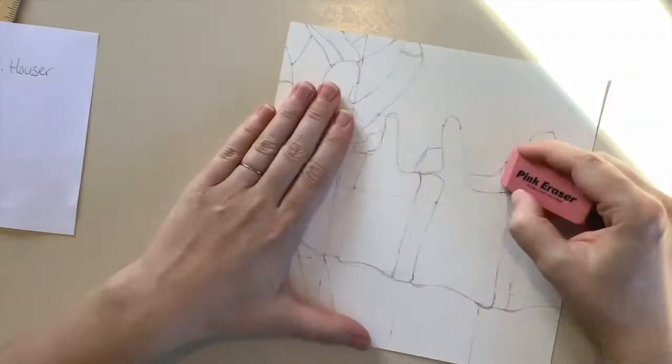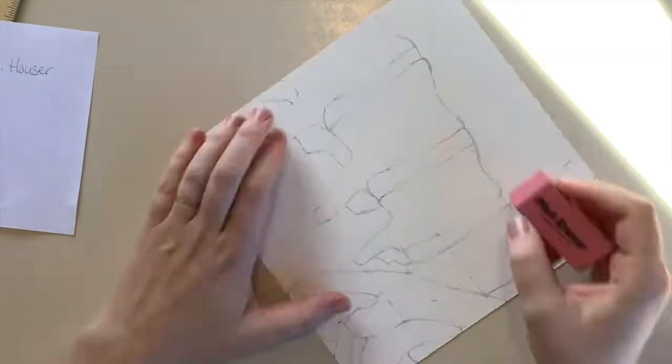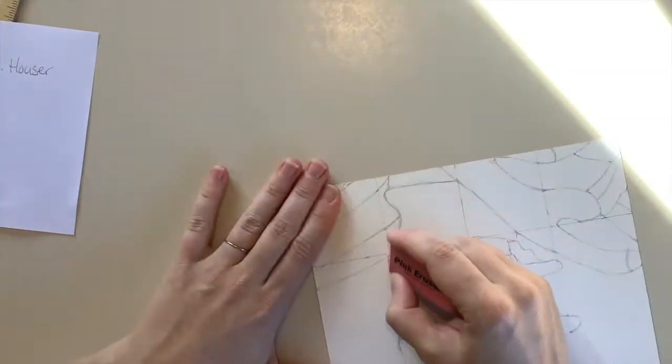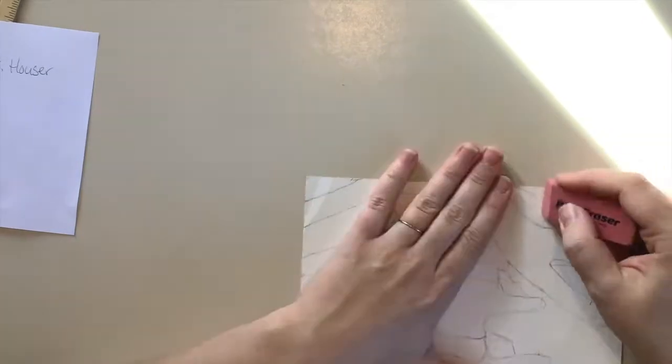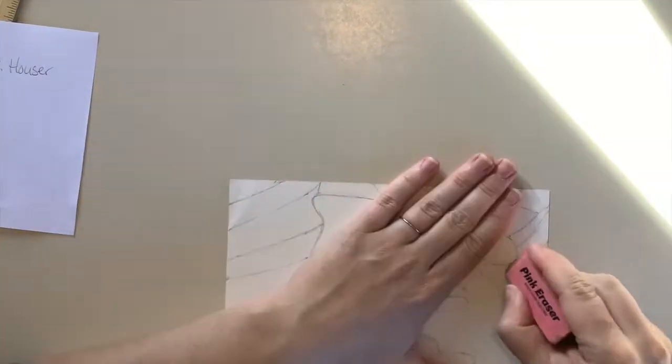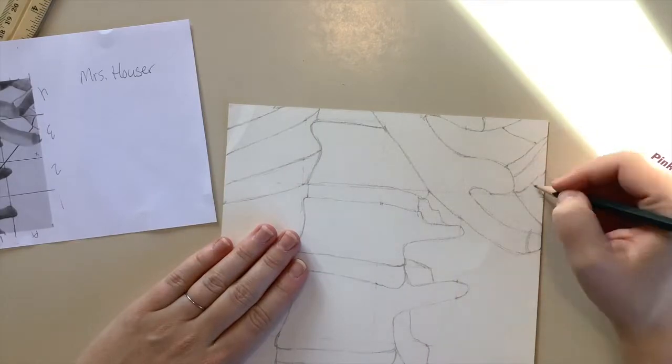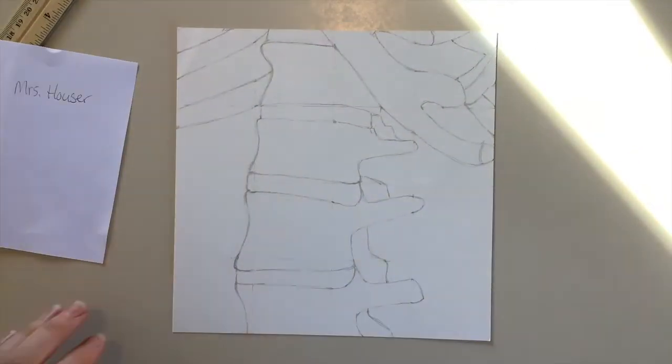It's really important that you do a good job getting the grid erased on the background because we're going to be using a thinner paint to cover it. It's not as important to get the grid out of the bone areas because we're going to be covering that with acrylic paint, which is generally thicker and will cover up those lines. This completes the tutorial on how to draw your image using the grid method.